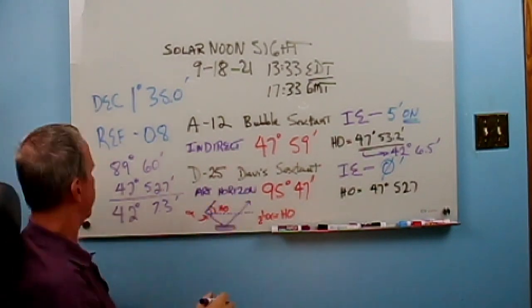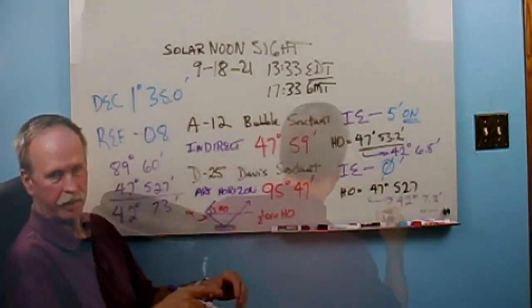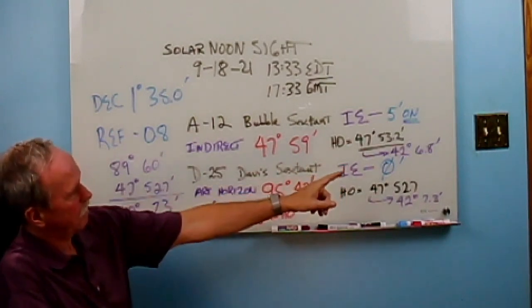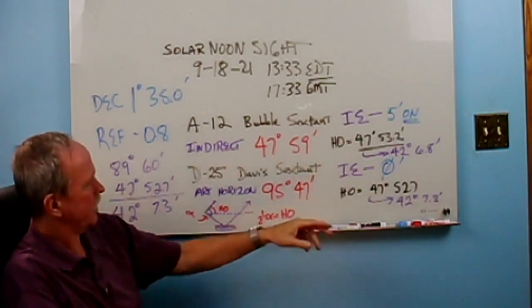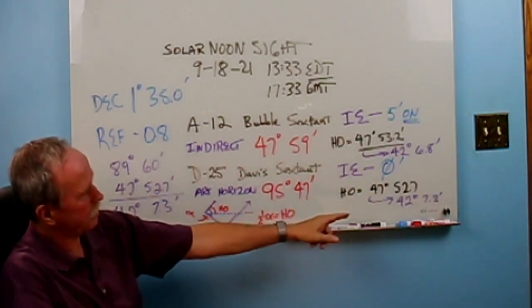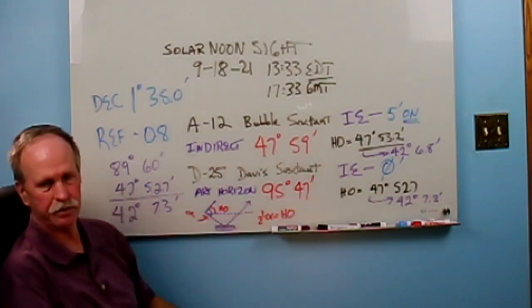And I notice, too, we're going to write that over and I notice I made a slight error over here. Hang on. There we go. Got that fixed. That was 42 degrees, 6.8 minutes, not 6.5 minutes. Sorry about that. And the other one that I got was 42 degrees, 7.3 minutes.